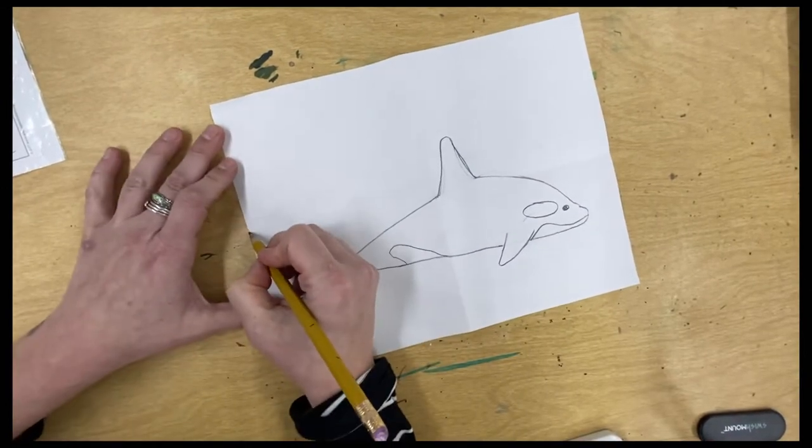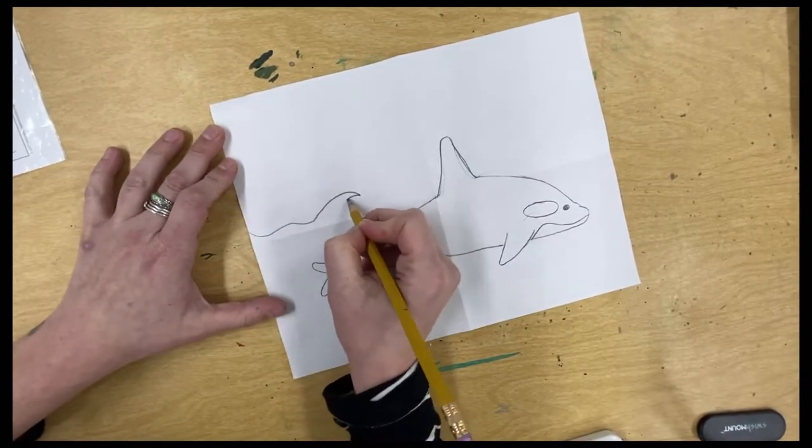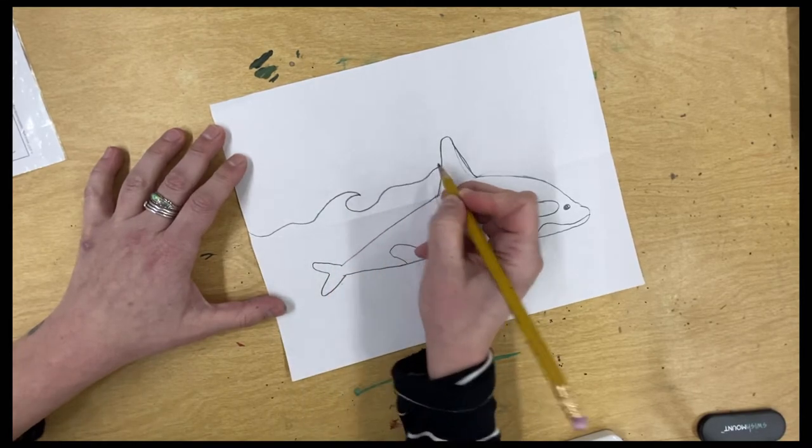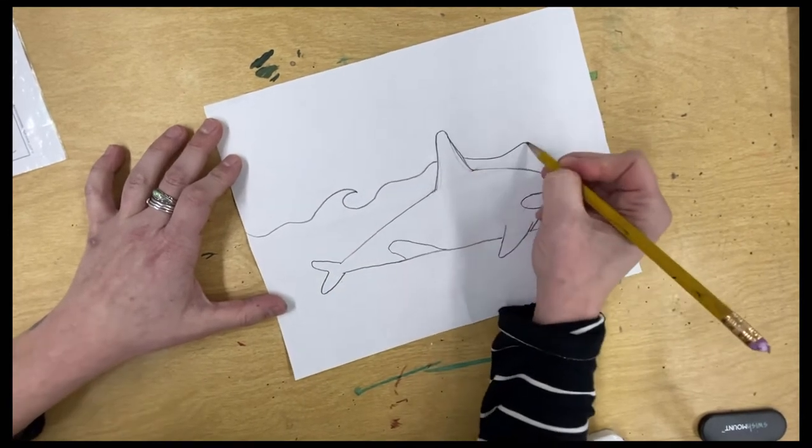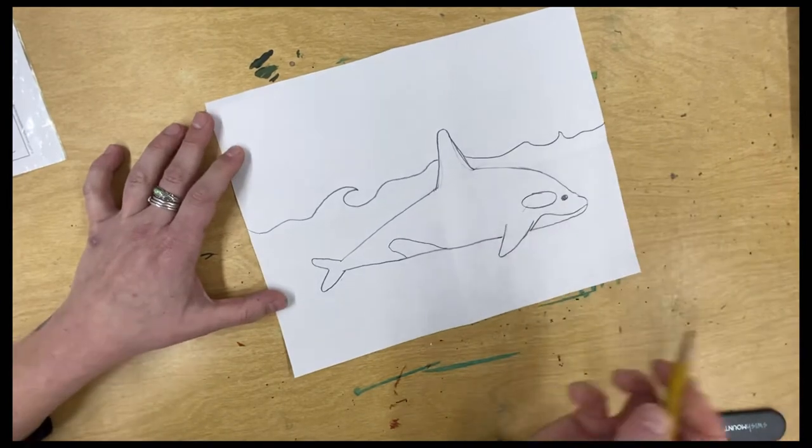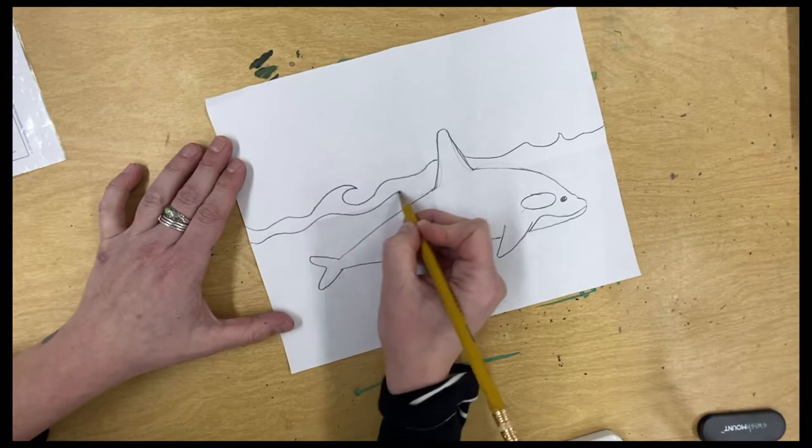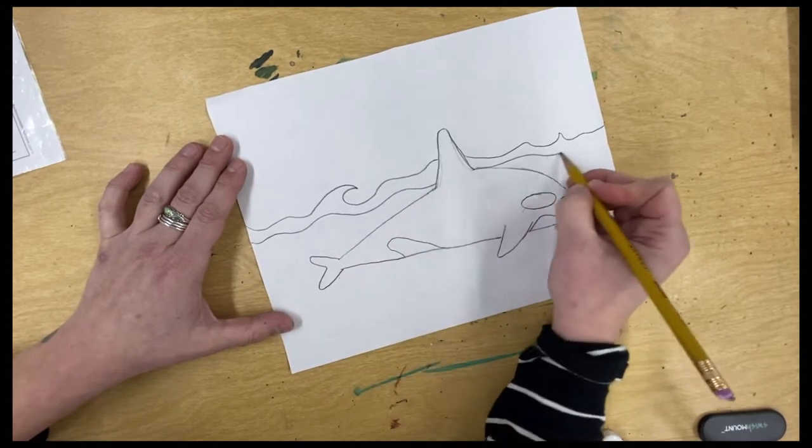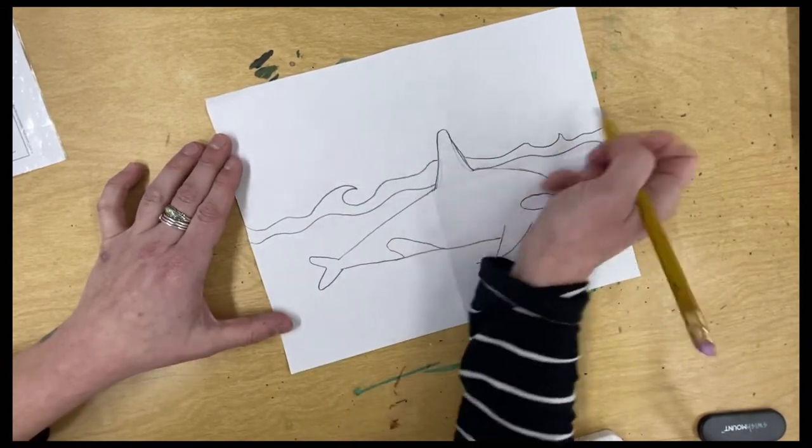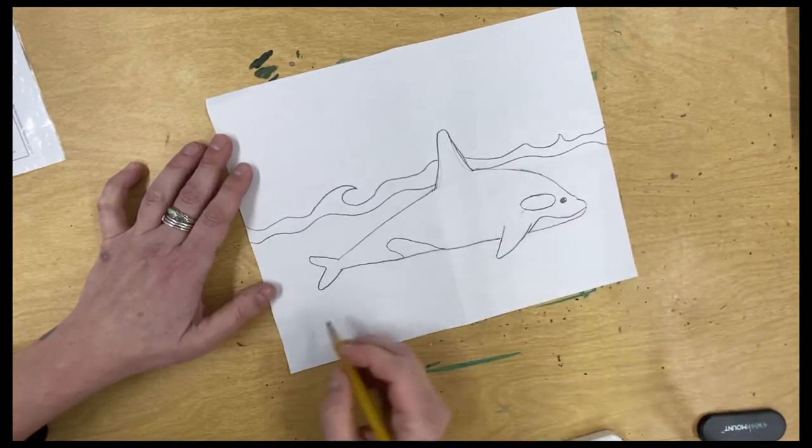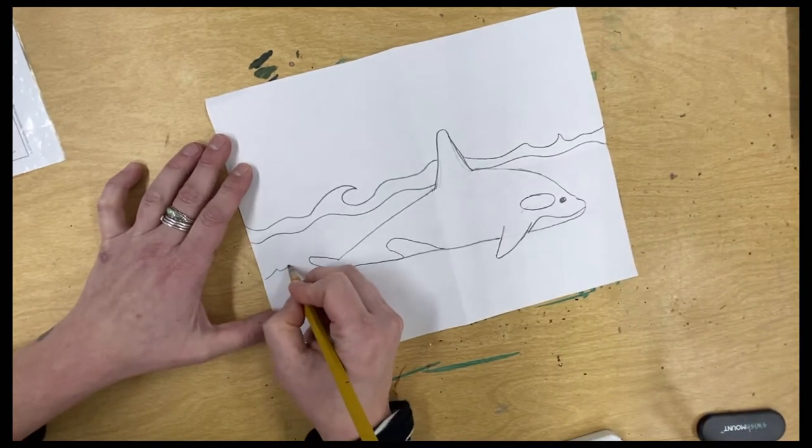Now let's draw some wavy kind of spirally cool water behind him. Make another little water line. I always like to draw water differently instead of just the regular old waves that we always do. We can put some of those little waves down here though.